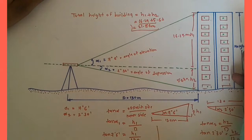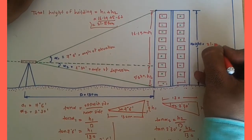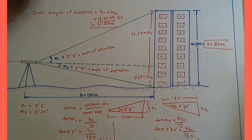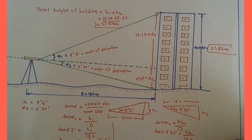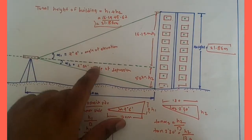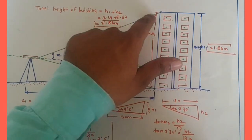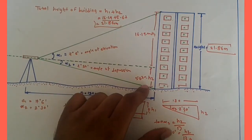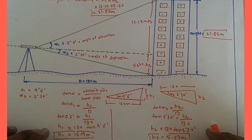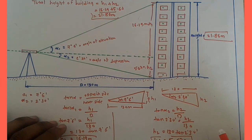The total height of the building is 21.86 meters. Similarly, you can find the height of any building by measuring the angle of elevation to the top of the tower and the angle of depression to the bottom, then applying the simple tangent equation.